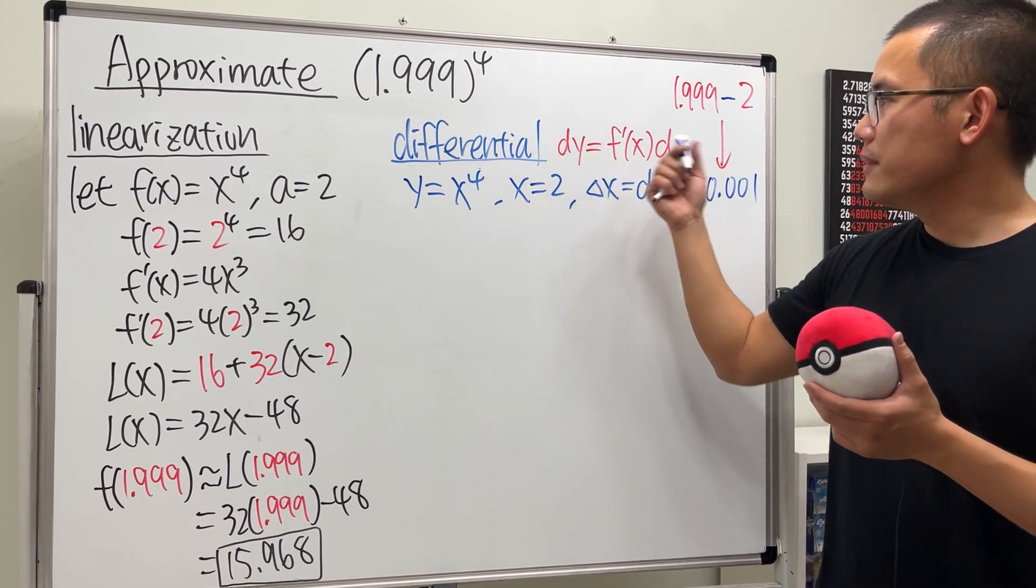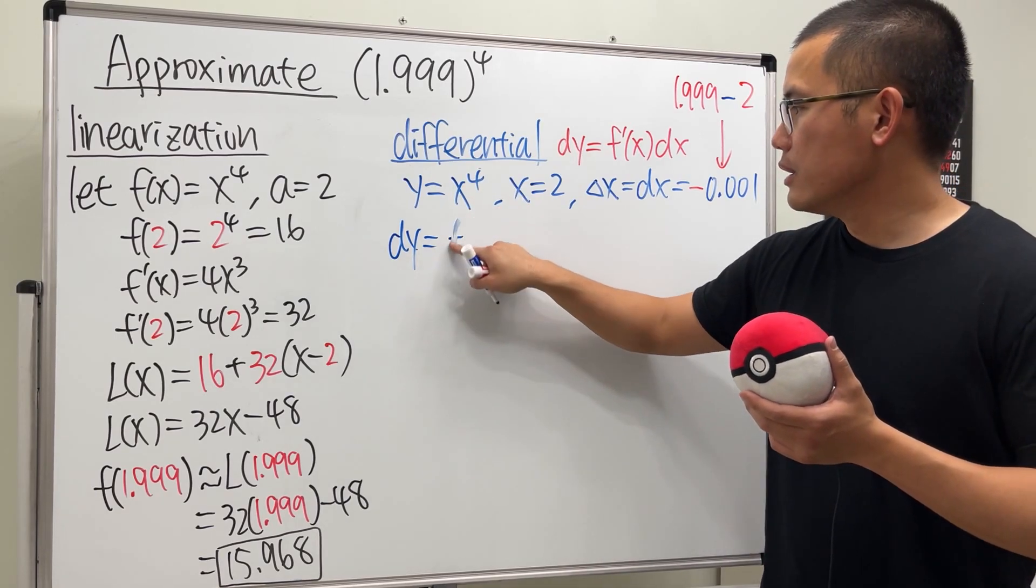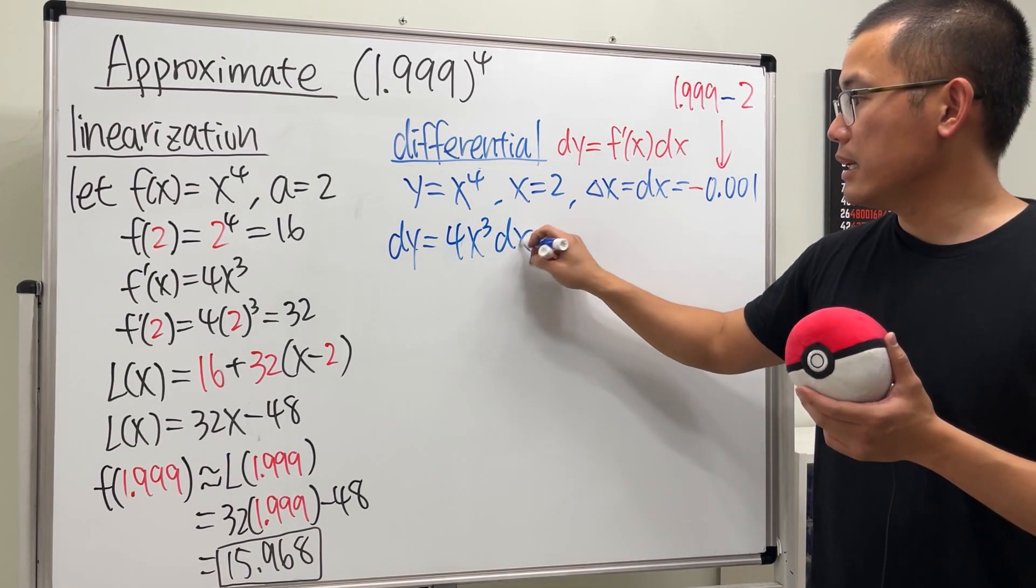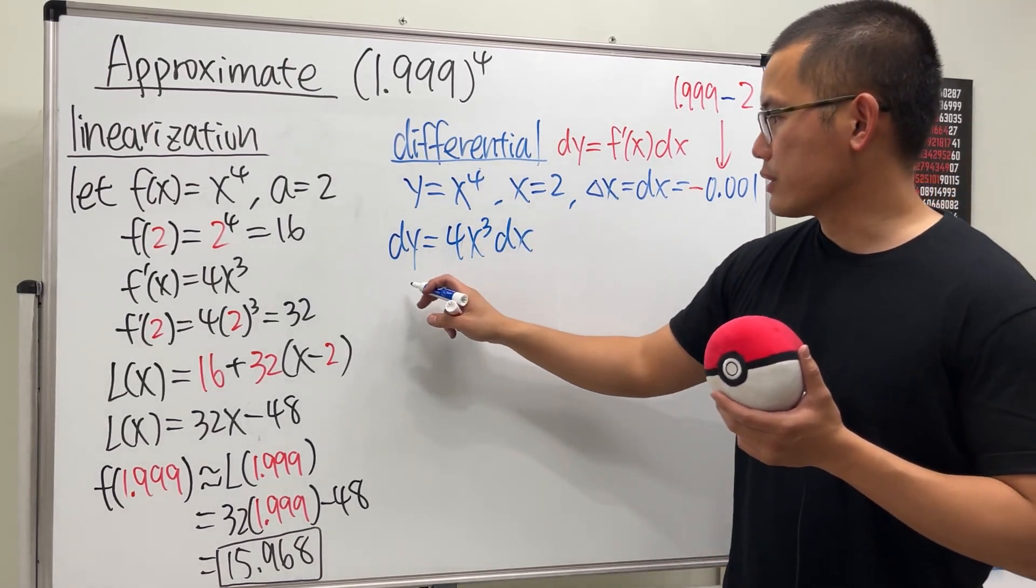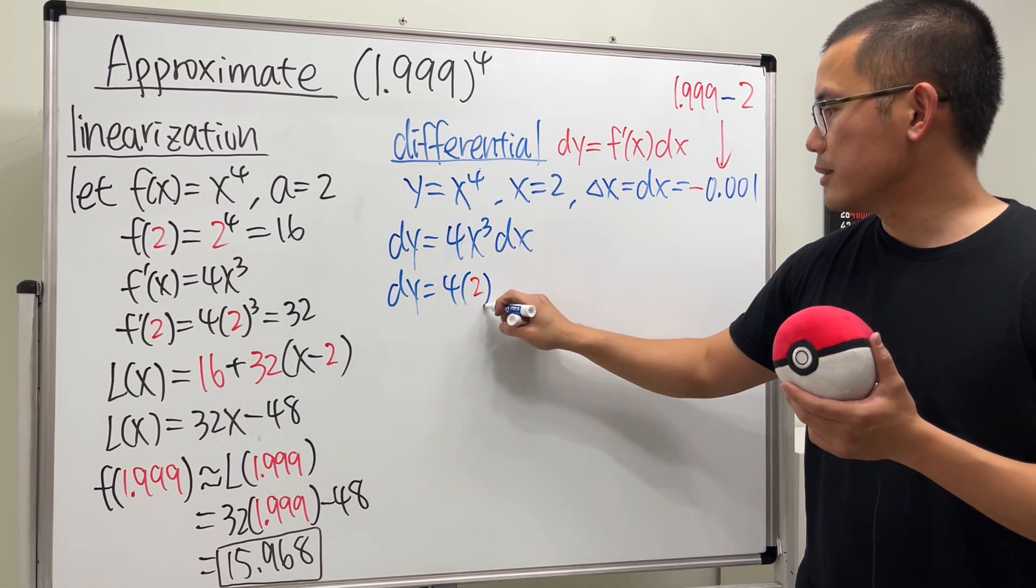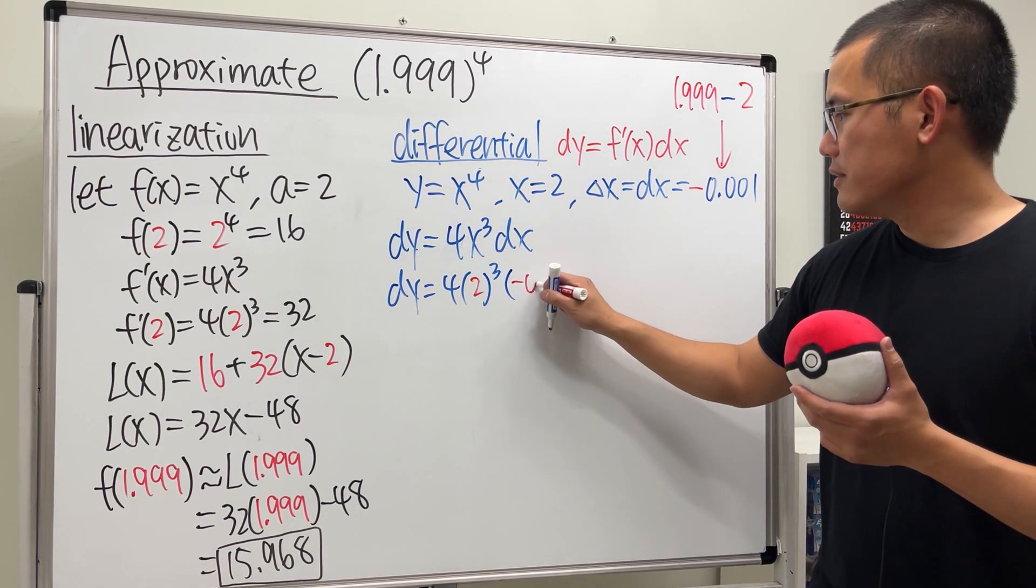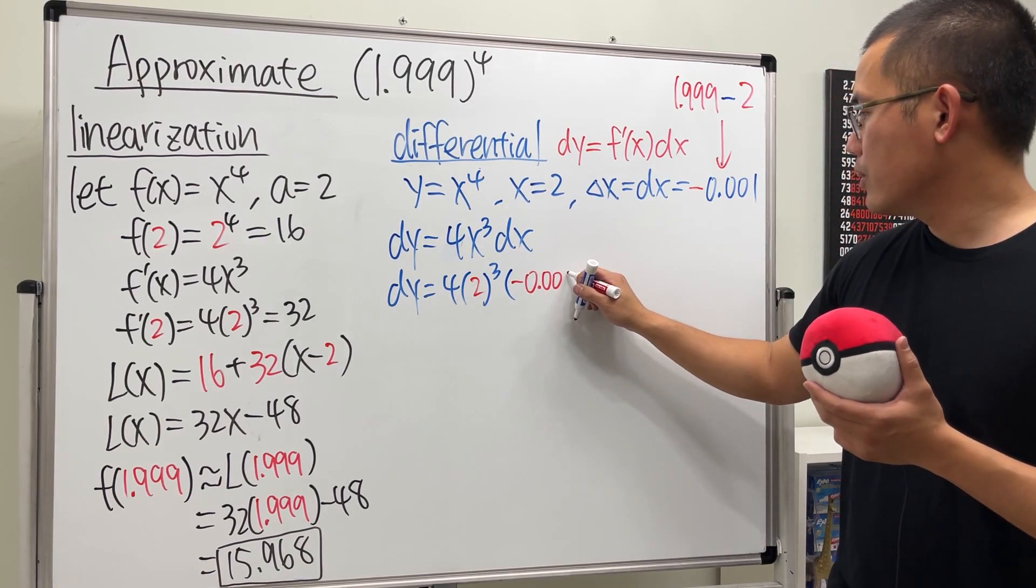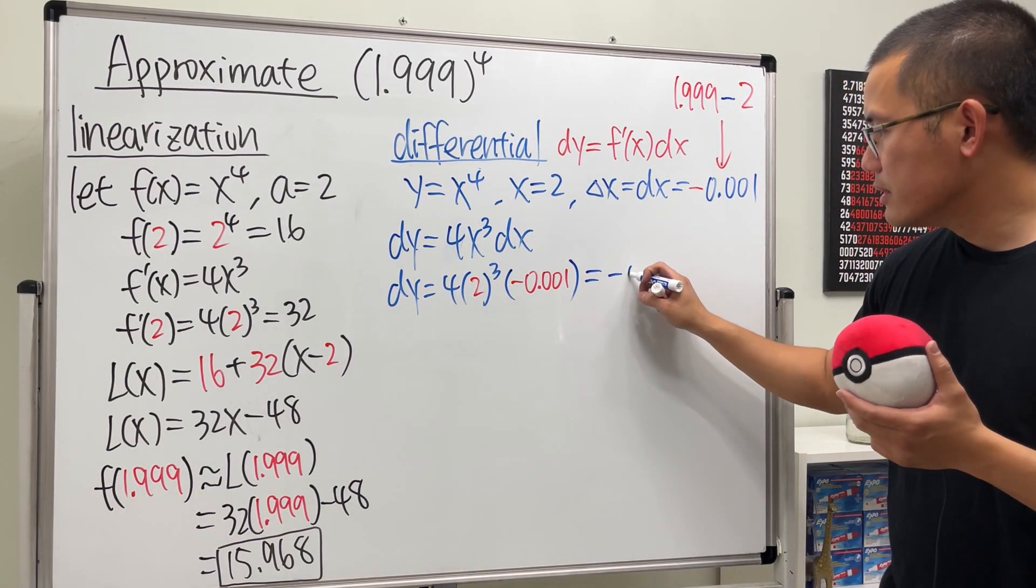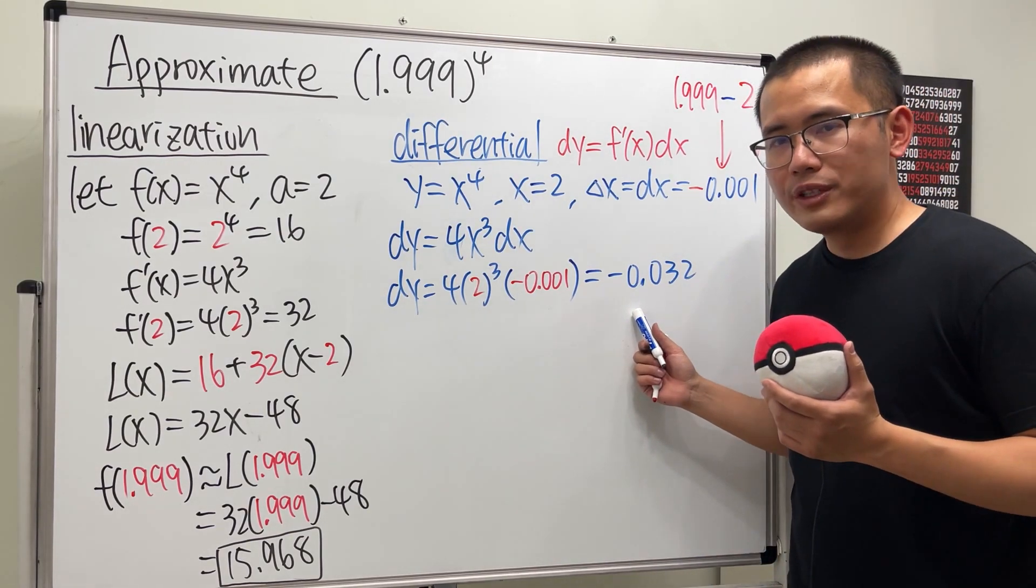Let's get the derivative. Here we go: dy = the derivative of this, which is 4x^3, and then multiply this by dx. Just go ahead and work that out. dy will be 4 times x, which is 2^3, times dx, which is that. Multiply this by -0.001.